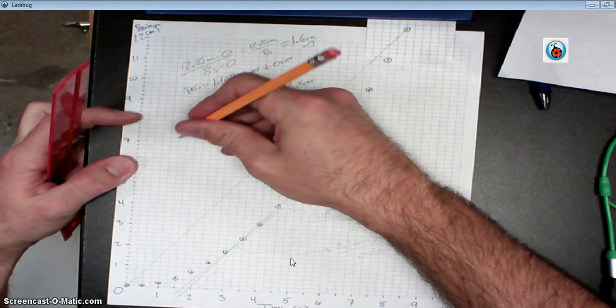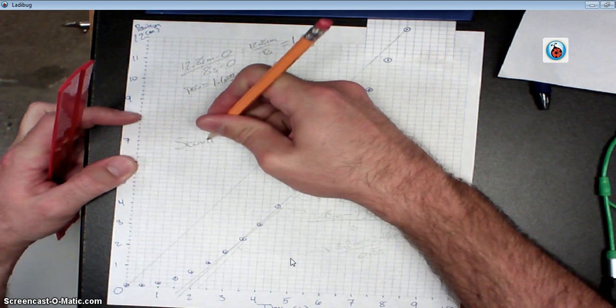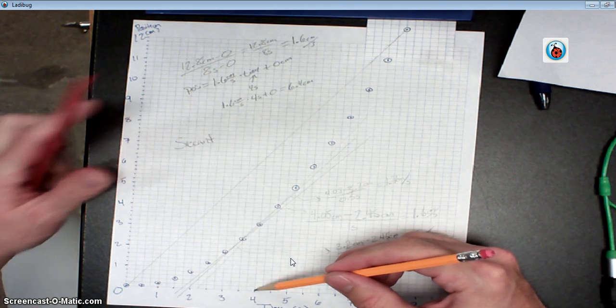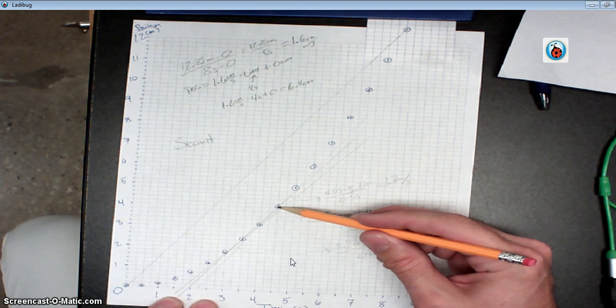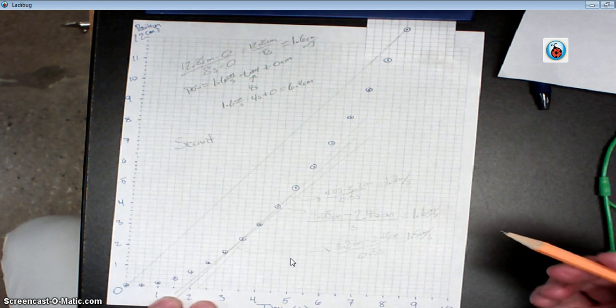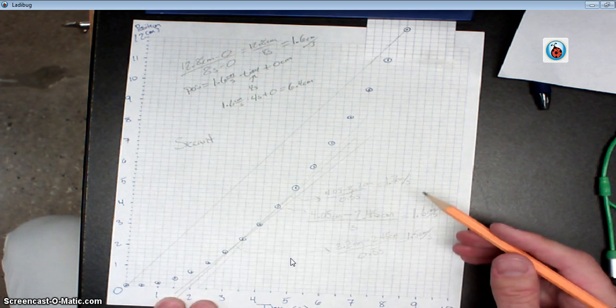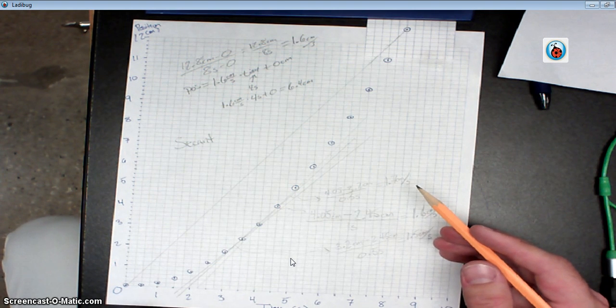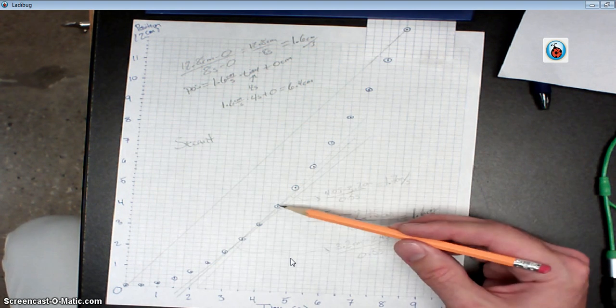To find the velocity at 4 seconds, use the data points just before and just after. So on your graph, the times will be a little bit different because you probably have times every two seconds, not every half a second. But that's how I use a secant to find the velocity at 4.